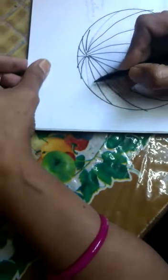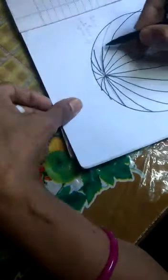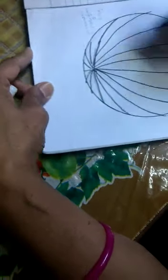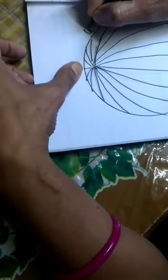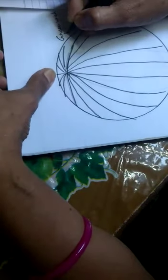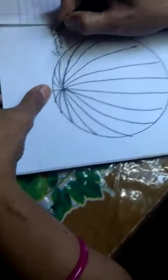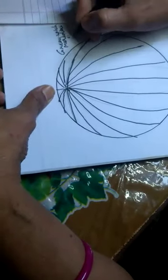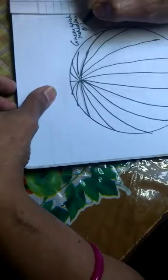This is Greenwich meridian, which is considered as 0 degree longitude.